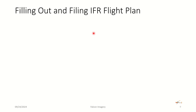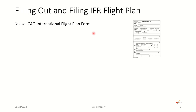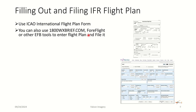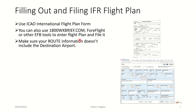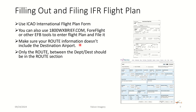Next, you want to fill out and file an IFR flight plan. Use the ICAO International Flight Plan form. If doing it by paper, you can print one out and submit it through 1-800-WX-Brief.com through a flight service station. Or you can go online to 1-800-WX-Brief.com and use the online flight service version — a really cool free tool to file VFR and IFR flight plans. You can also use ForeFlight and other EFB tools to enter and file your flight plan. Make sure your route information does not include the destination airport — your route section should basically be where you're getting on and off the route to your destination.